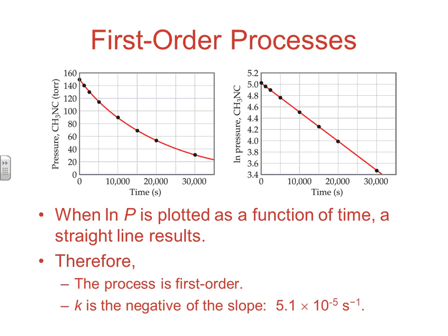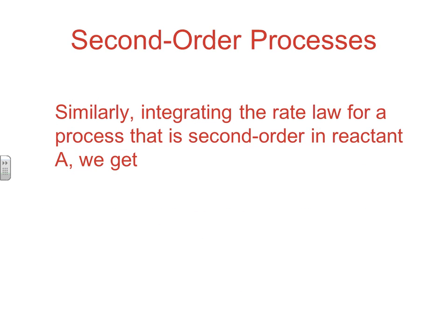In the first order process, two important things: the very nature of the graph being linear tells you it's first order, and if we find the slope of that line, the negative slope gives us the value for k. So we can establish both the order and the rate constant for that reaction.